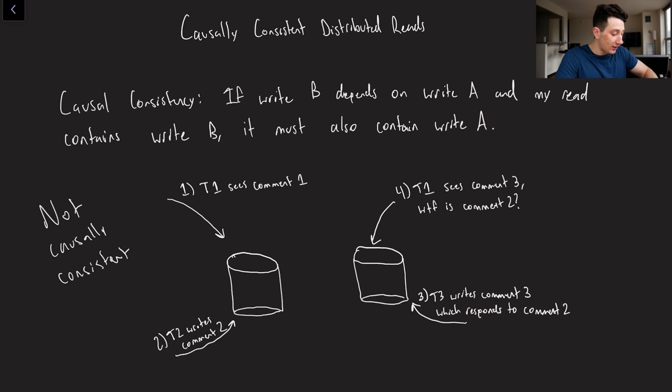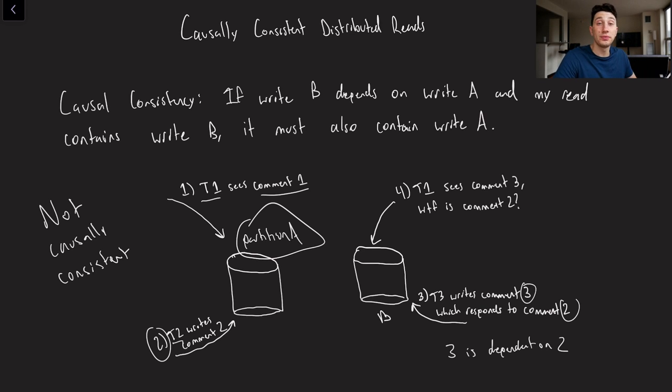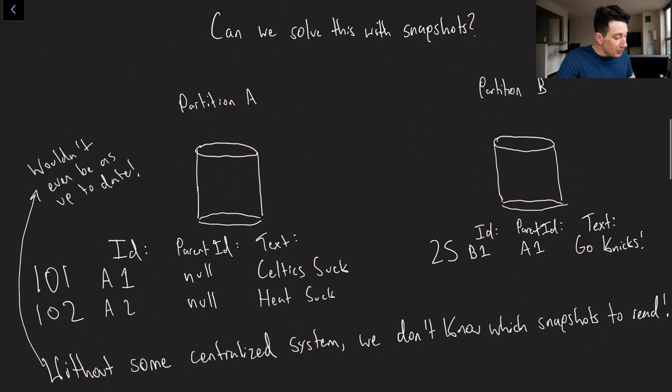What's an example that is not causally consistent? It has these following steps. First, we have transaction 1, which is going to see some comment 1 on partition A. We also have partition B on the right. The next thing that's going to happen is we have transaction 2 which writes comment 2. Then in the third step, transaction 3 writes comment 3 that responds to comment 2, which means 3 is dependent on 2. So there's a causal relationship there. Finally, in step 4, T1 sees comment 3 and says this thing is dependent on comment 2. But I never saw comment 2 the first time I read partition A, because it happened between steps 1 and 4. We need to make sure that when we do our read from T1, we have a causally consistent state between the two of them.